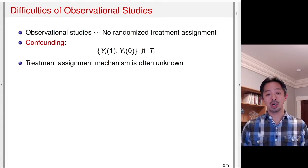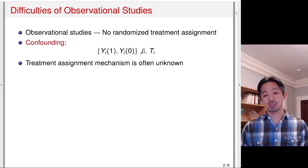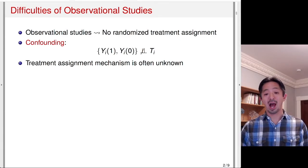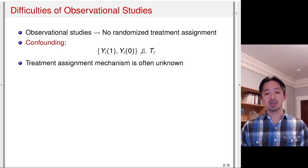If you're interested in studying effective medical treatments, you have to figure out why certain doctors assign a particular treatment to certain patients rather than others — what factors really influence that decision. So it's very important to figure out what the treatment assignment mechanism is and what factors are involved in that mechanism.